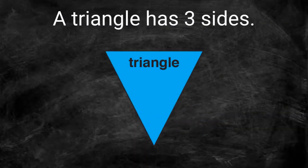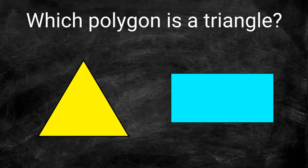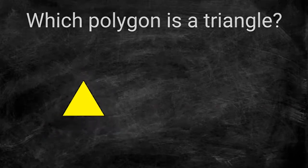Any polygon with three sides is a triangle. A triangle also has to have three vertices. Which of these polygons is a triangle? This polygon has three sides and three vertices. This is a triangle.